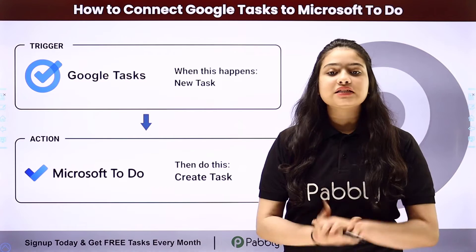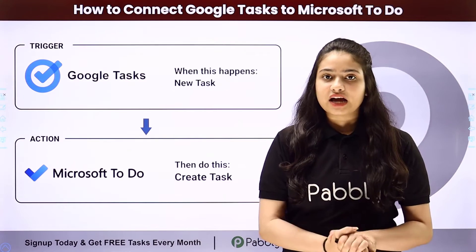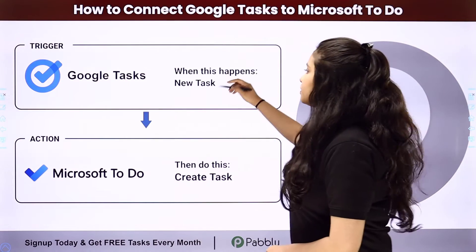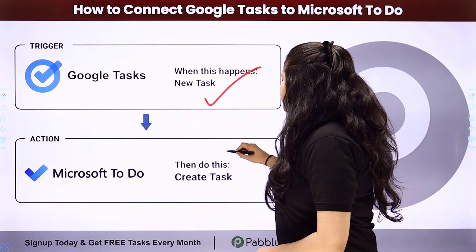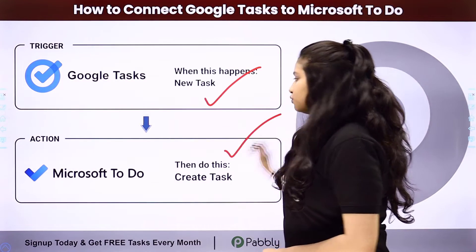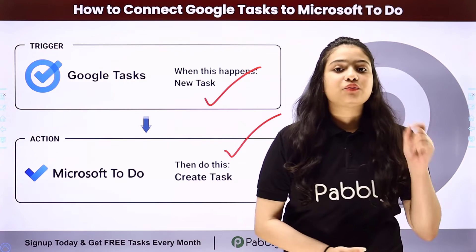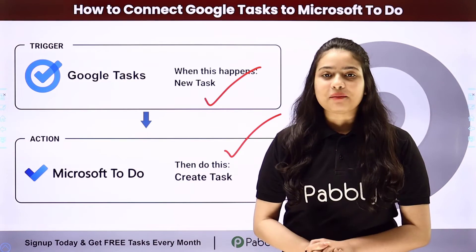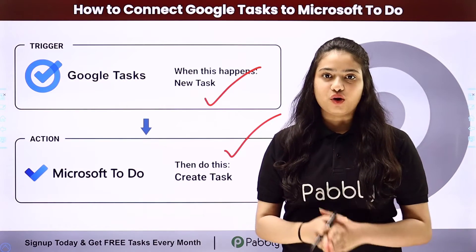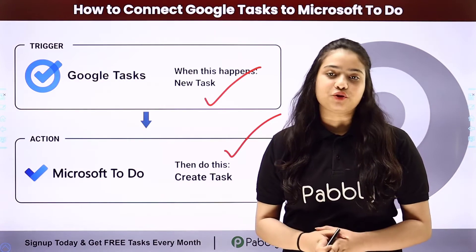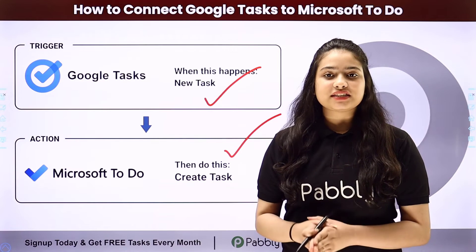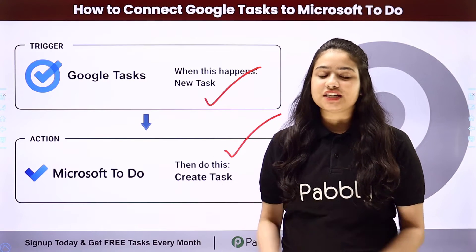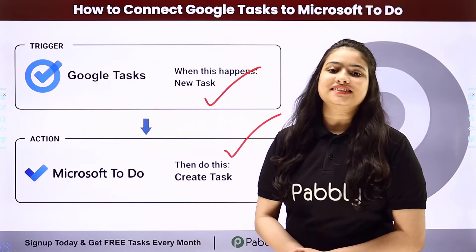Pably Connect runs on two principles: trigger and action. Here our trigger will be Google Tasks and our action will be Microsoft To-Do. We will connect both of them by using Pably Connect in order to automate this entire process. To learn the entire automation step by step, let me take you all to my screen.